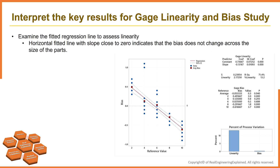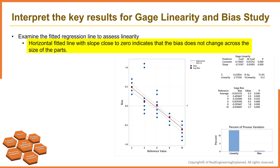To ensure that your results are valid, consider the following guidelines when you collect data. Each reference part must have a known measurement — for example, you use a reference part with a known dimension of 2 mm to calibrate your caliper. Data should be collected in a random order, select parts that represent the actual or expected range of the measurement, and one operator should perform all the measurements.